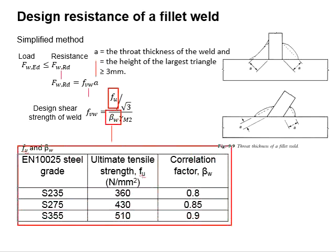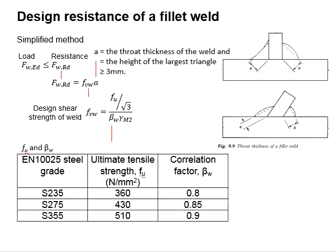It was said that the grade is S275, therefore f_u will be equal to 430 and beta_w will be equal to 0.85. The factor of safety gamma_M2 will be equal to 1.25.